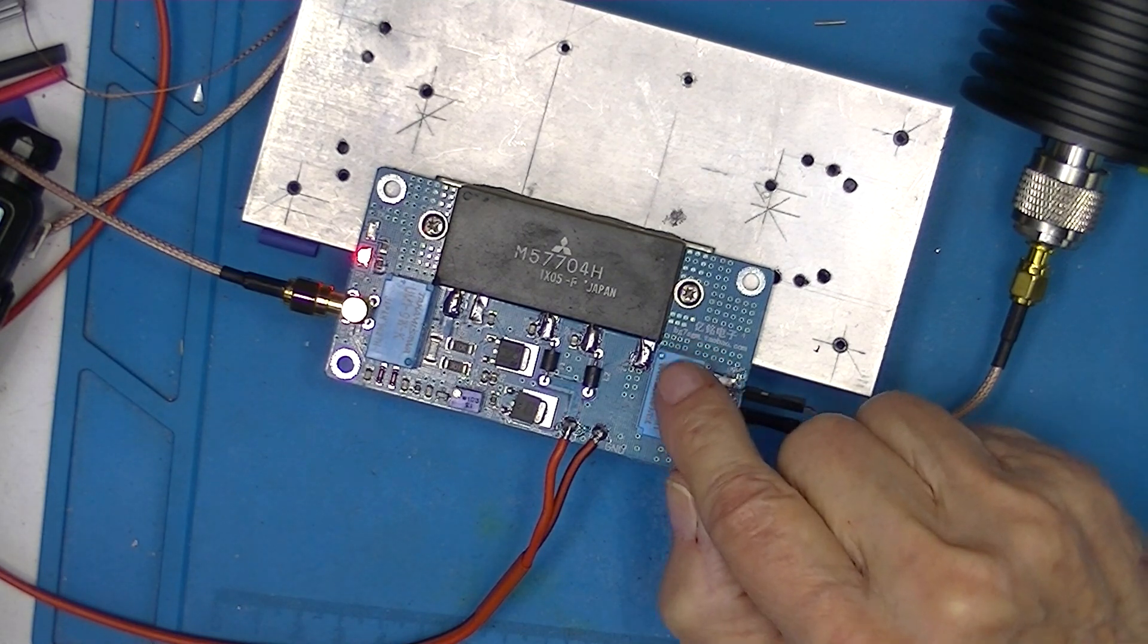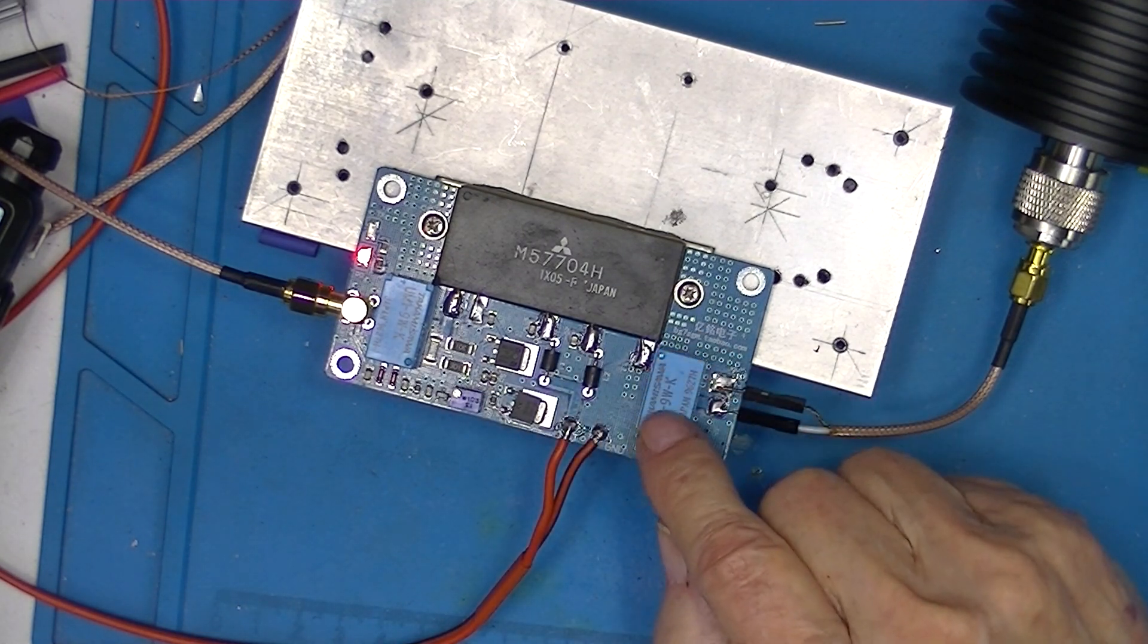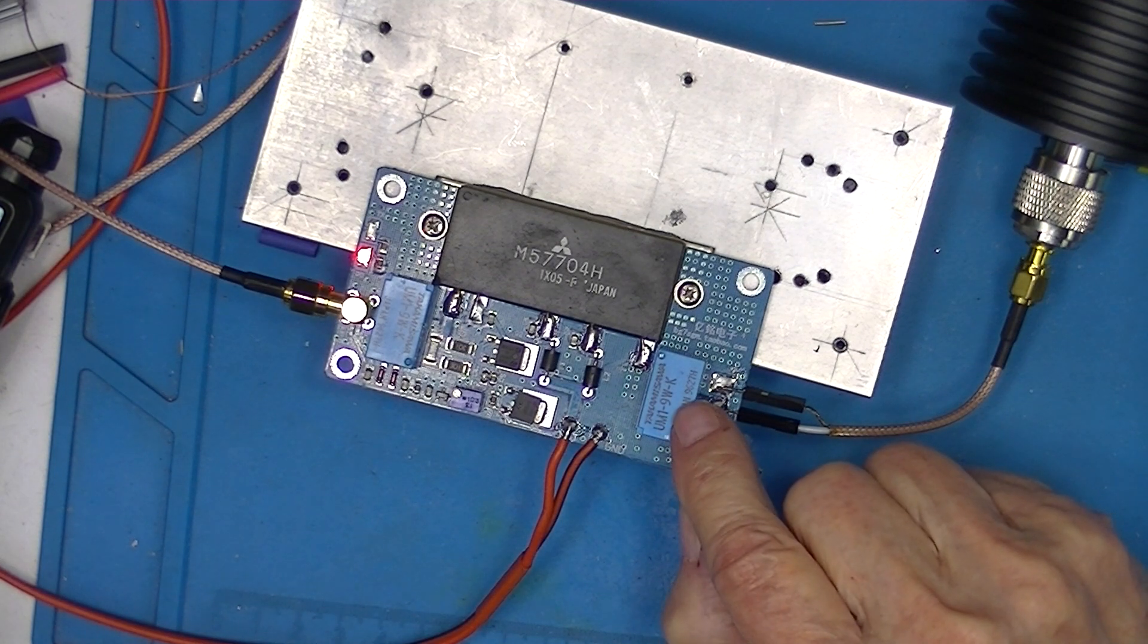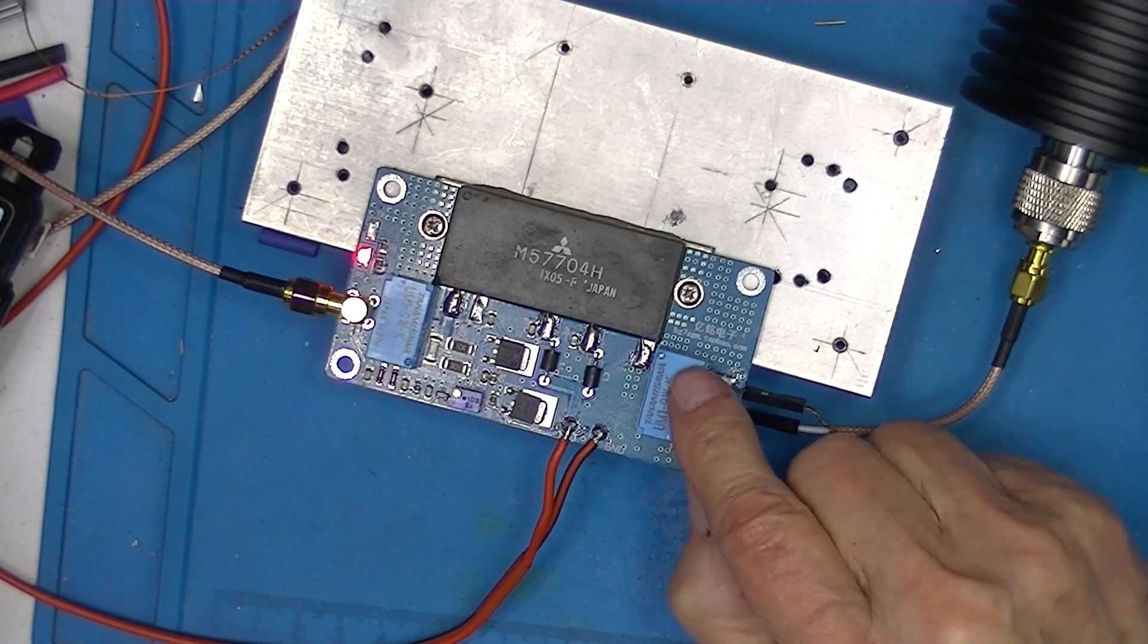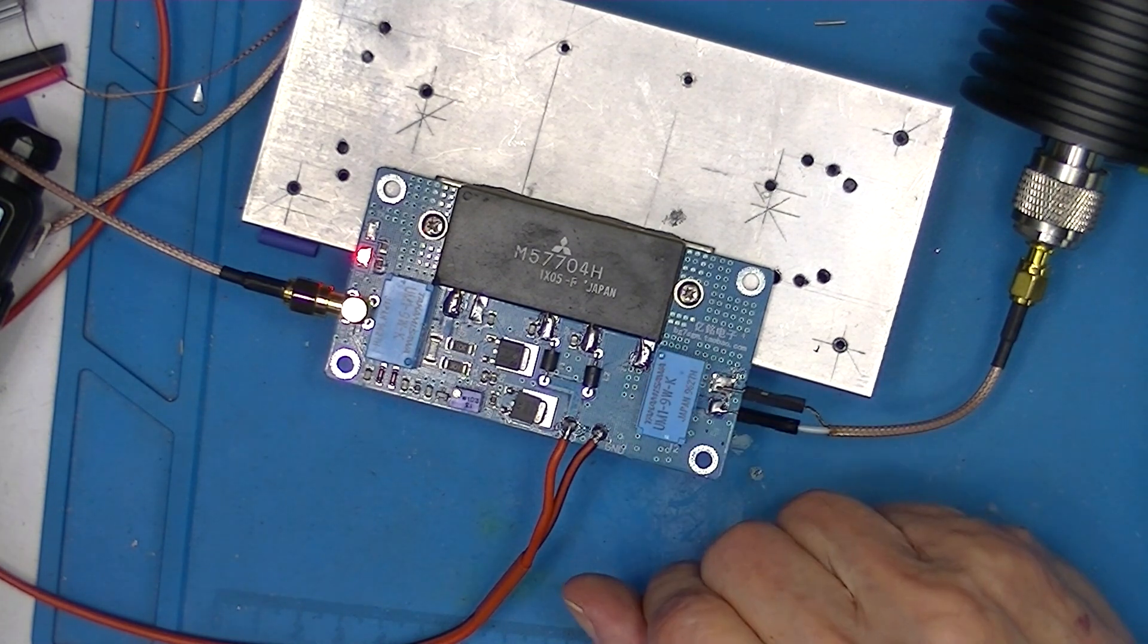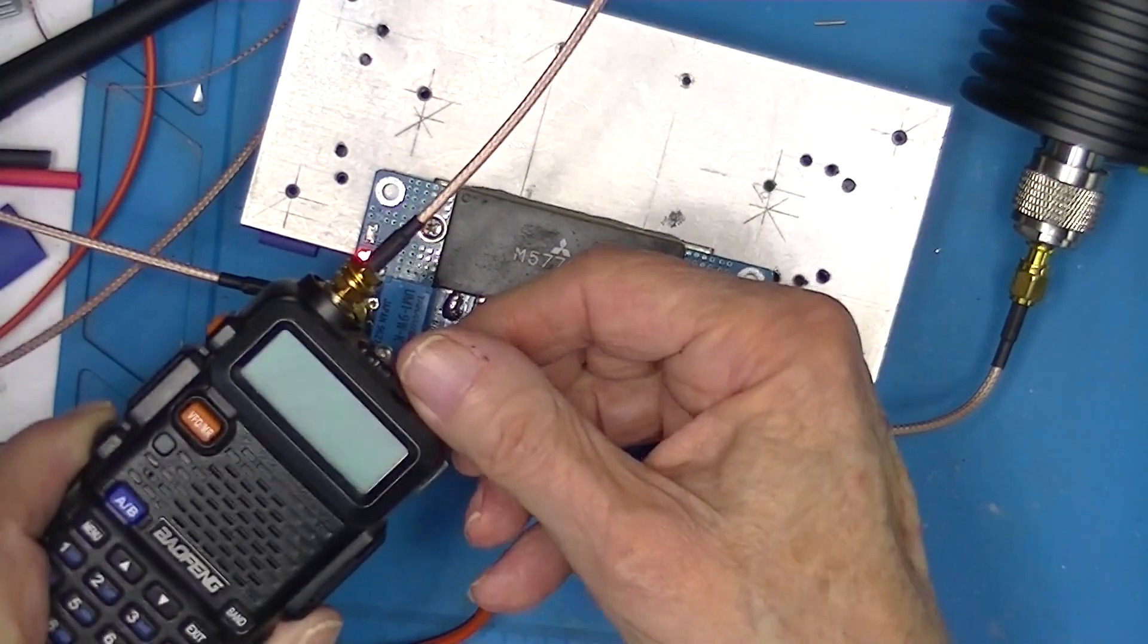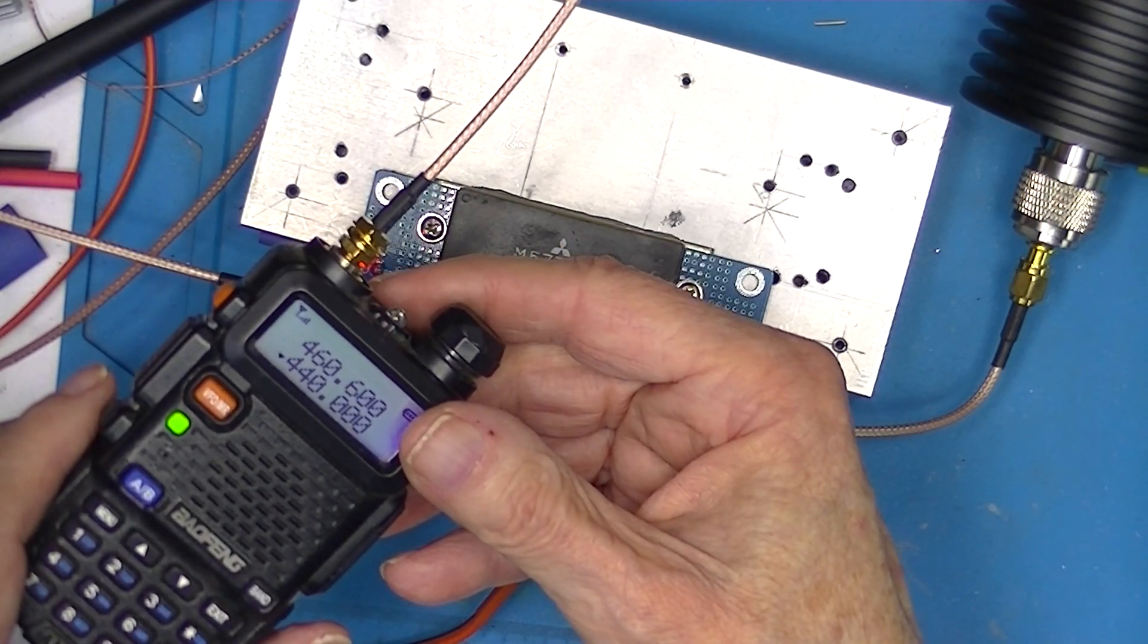Now, this relay, well both of them, but this one's the important one, is only rated for 10 watts. I've got a Baofeng set to 440 MHz.